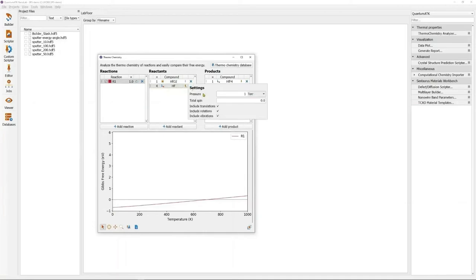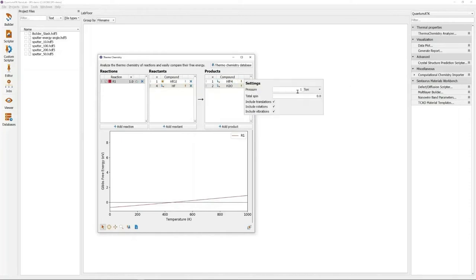Now we can include a reactant pressure. So we choose a value of 0.2 torr. And for the product pressure, we can choose 0.01 torr.